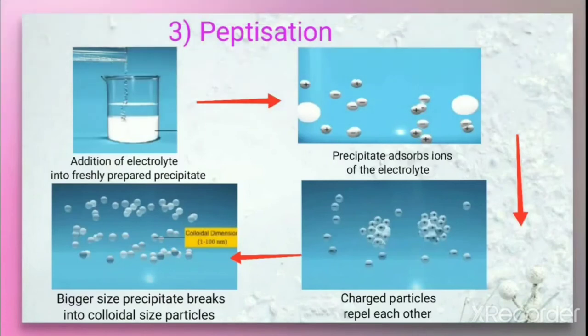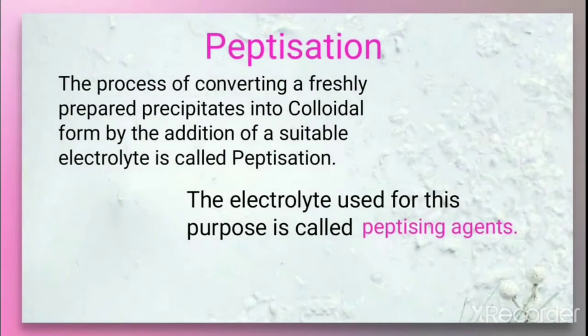This peptization method is the opposite of coagulation. In coagulation, a colloidal solution is converted into a precipitate, but in peptization, a precipitate is converted into a colloidal solution. The process of converting a freshly prepared precipitate into colloidal form by the addition of a suitable electrolyte is called peptization.